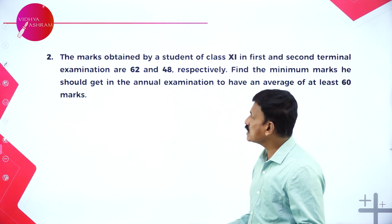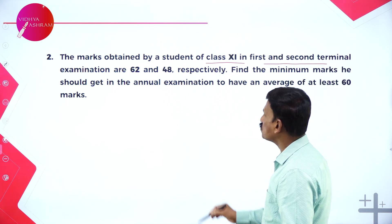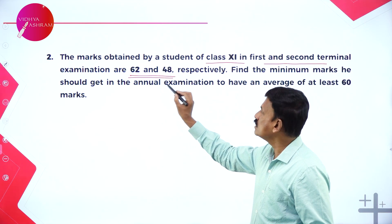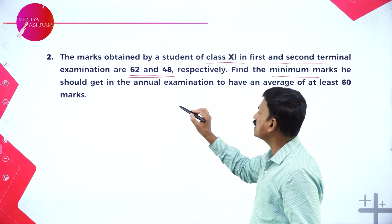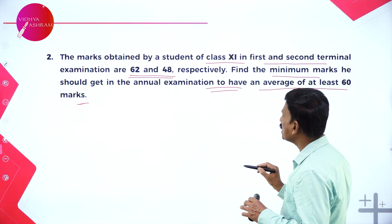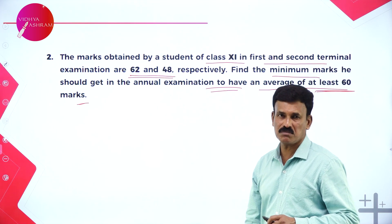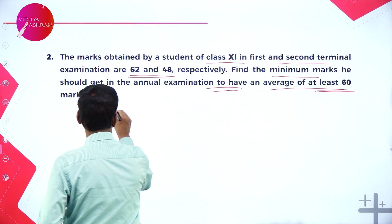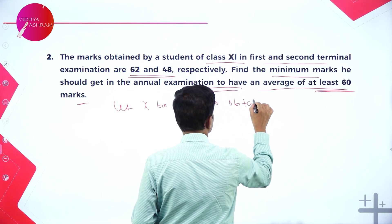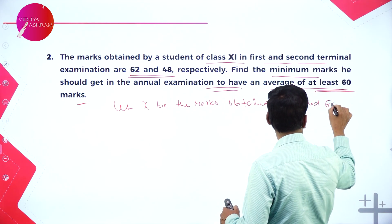Now let us move on to statement problems. The marks obtained by a Class 11 student in the first and second terminal examinations are 62 and 48 respectively. Find the minimum marks he should get in the annual examination to have an average of at least 60 marks. Let x be the marks obtained by the student in the annual examination.